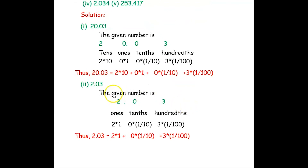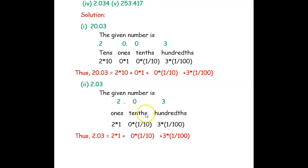The next question is 2.03. We write the number 2.03. The decimal point separates the integer part on the left from the decimal part on the right. The digit immediately to the left of the decimal point is the ones place, and to the right we have tenths, then hundredths.